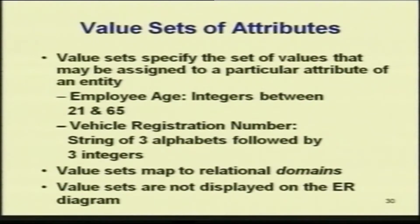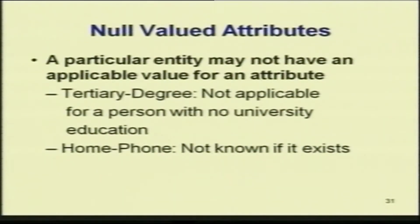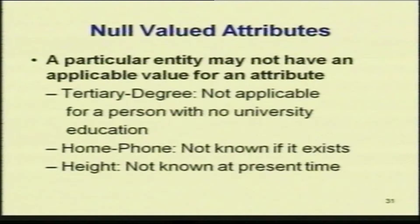For example, employee age should be integers between 21 and 65; vehicle registration number should be a string of three alphabets followed by three integers. Value sets map to the domains in the relational model. Value sets are not displayed on the ER diagram. Now, regarding null valued attributes: a particular entity may not have an applicable value for an attribute. For example, tertiary degree is not applicable for a person with no university education, so you put a null value.